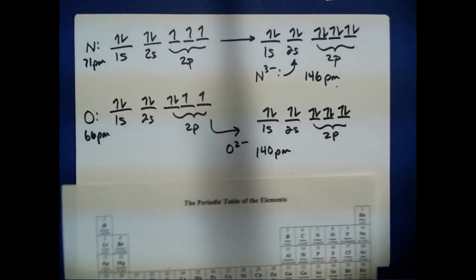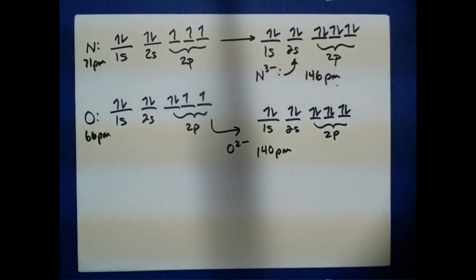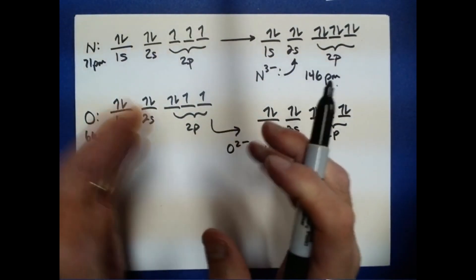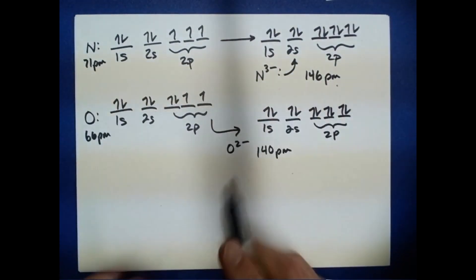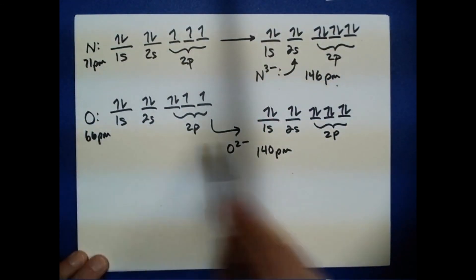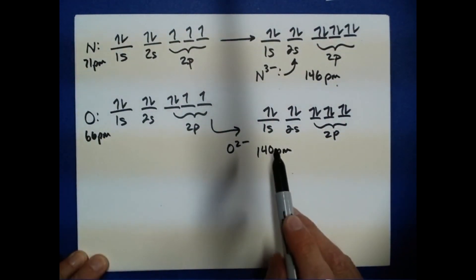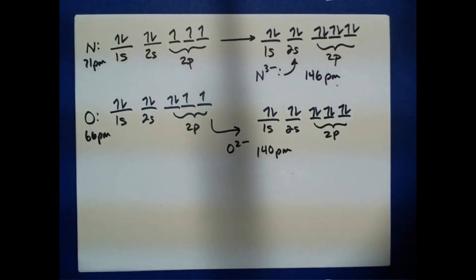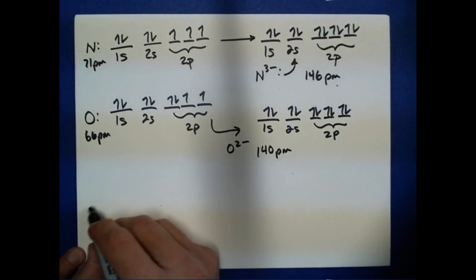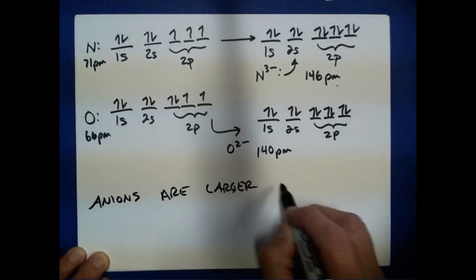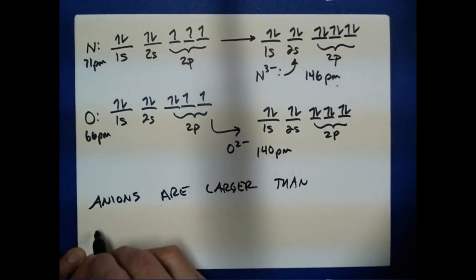In contrast to cations, which shrink going from the atom to the cation, anions do the opposite. When you add electrons to atoms to make anions, the size of the anion increases. So the general rule is that anions are larger than the atoms from which they come.